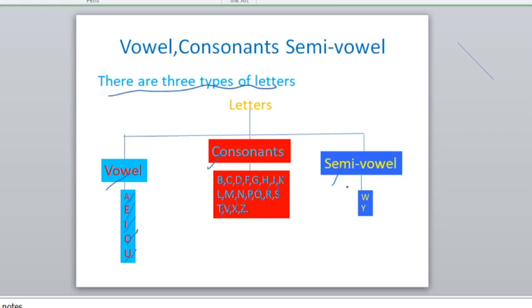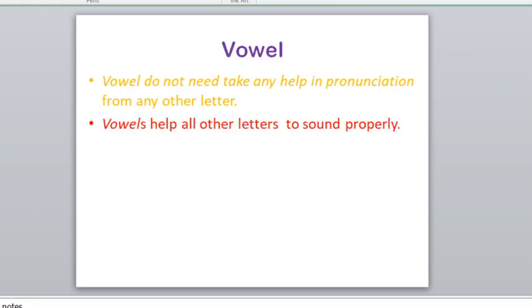And semi-vowel has two types of letters: W and Y. Clear. Now next.